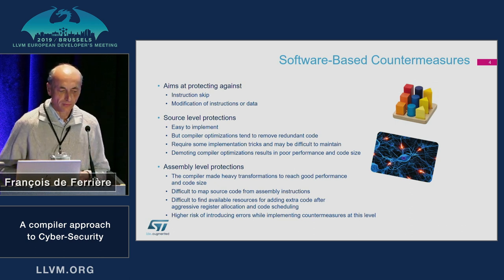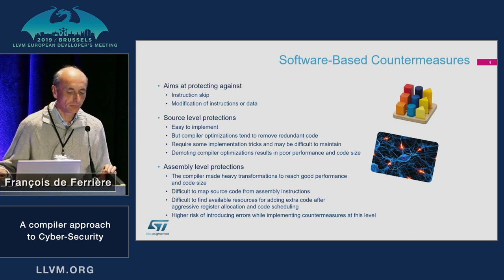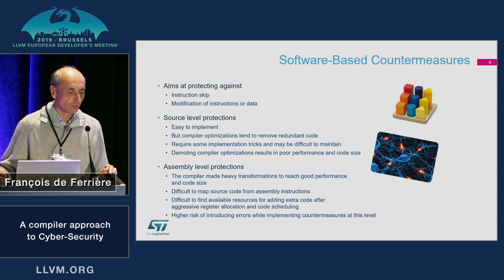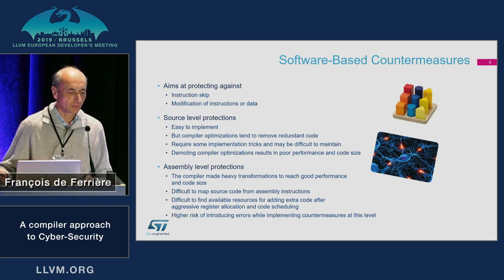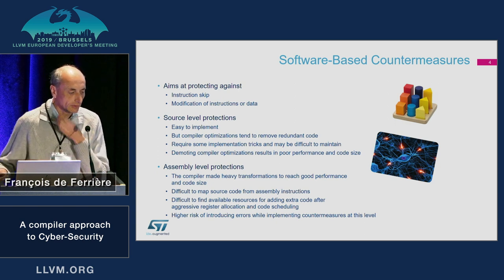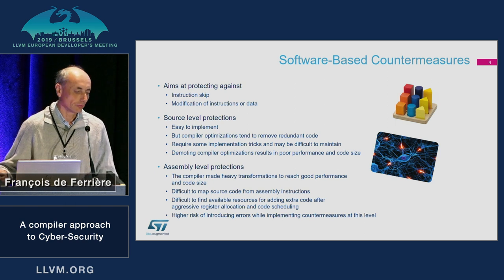To protect against these attacks, there is the possibility to develop some countermeasures in software. It can be done at the source level — it's easy to implement, but the compiler tends to remove them, so it requires some tweaks when doing the implementation. Or, sometimes we have to disable some optimizations, but it results in poor quality of the final code.